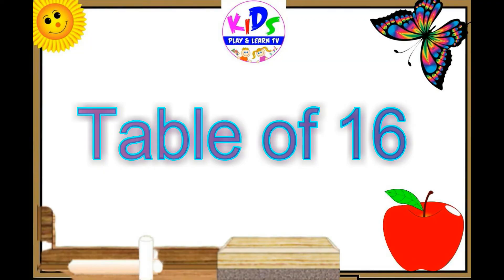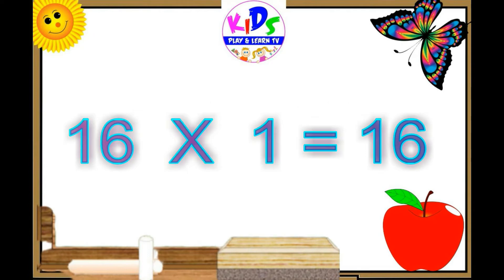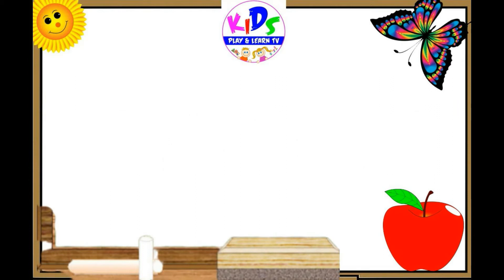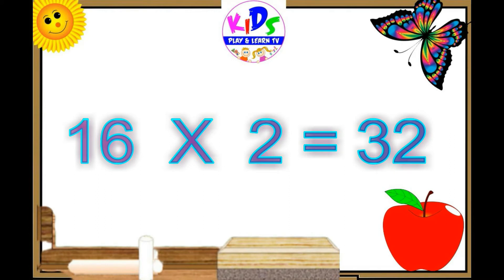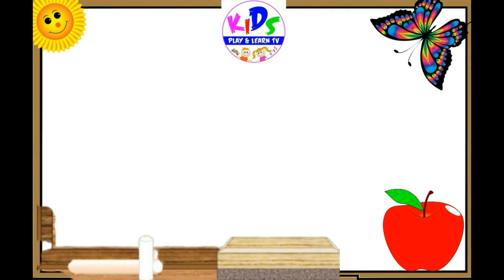Hello, let's learn the table of sixteen. Sixteen ones are sixteen, sixteen ones are sixteen. Sixteen twos are thirty-two, sixteen twos are thirty-two.